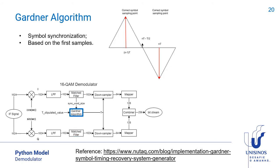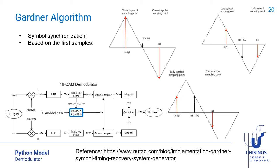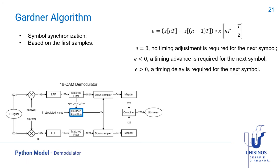The Gardner algorithm was used to synchronize the symbols. It compares the current symbol sampling point with the previous sampling point. This figure shows when the correct point is found. This one is when there is a late sampling. This one is when there is an early sampling.